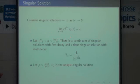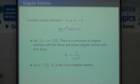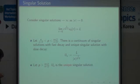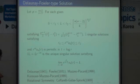Let's think about the singular solution. The singular solution like this one — in this case, this is the unique singular solution. We can prove uniqueness. Not just in the class of radial solutions — symmetry of the singular solution is also proved by Caffarelli-Gidas-Spruck.